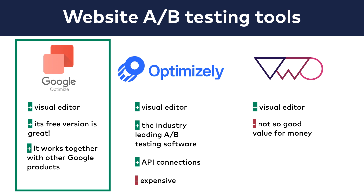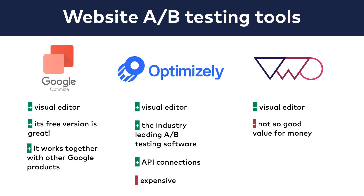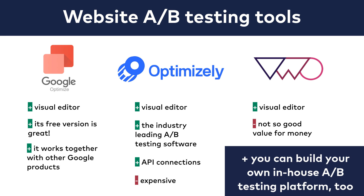So I use Google Optimize at Data36, and some of the bigger companies I've worked with use Optimizely. Many bigger companies who have a strong A/B testing culture and run experiments continuously sooner or later decide to build their own in-house A/B testing platform. For instance, we had this at Prezi. If you already have your own data warehouse and you store your data on your own data servers, adding an A/B testing solution to it is not that big of a project.